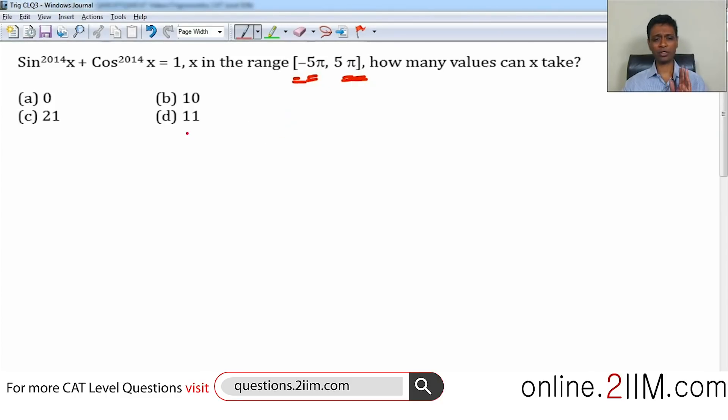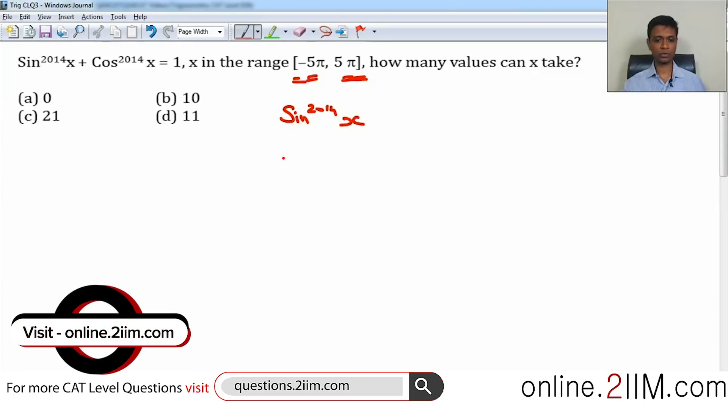I am going to do this step by step. First let us forget sin^2014(x) plus cos^2014(x). I am going to take only sin^2014(x). Now sin(x) lies between minus 1 and plus 1, this we know.